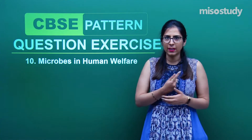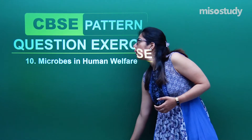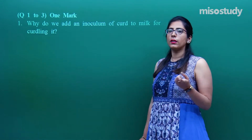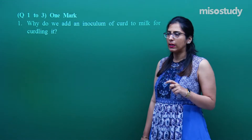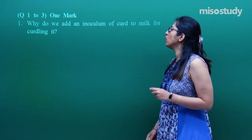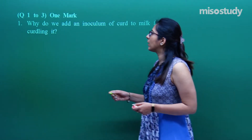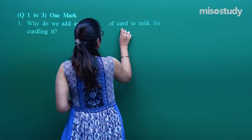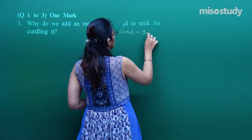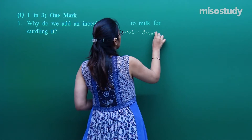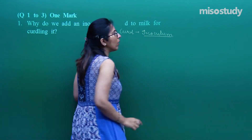Questions number 1, 2, and 3 will be of one mark, so you have to answer accordingly. Question number 1: Why do we need to add an inoculum of curd to the milk for curdling it? What we are producing is curd, and the inoculum we use — why? Because these inoculums contain millions of bacteria.